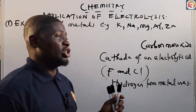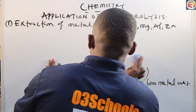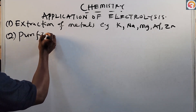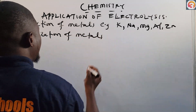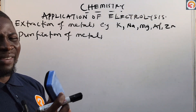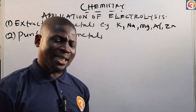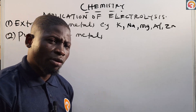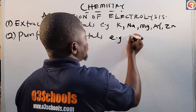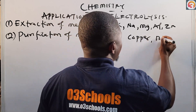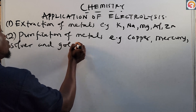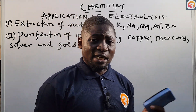The second application is the purification of metals. Electrolysis is useful for the purification of metals, especially those below the electrochemical series — for example, copper, mercury, silver, and gold. All these metals can be purified through electrolysis.